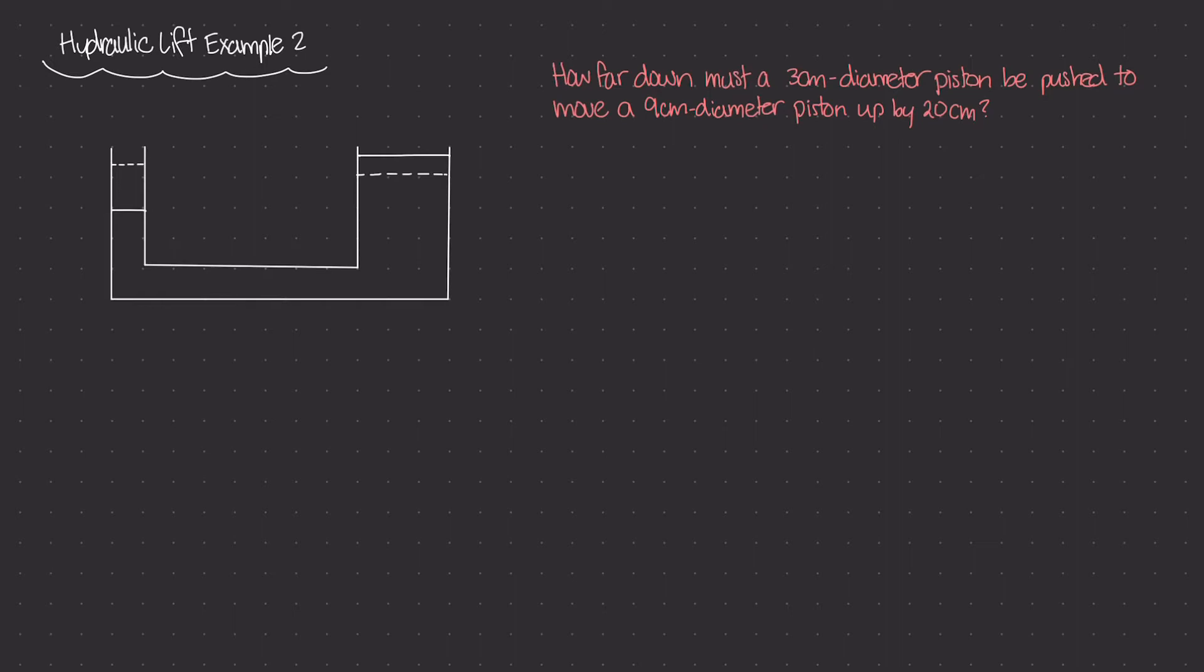In other words, if we push piston one down by a certain amount, then the volume that got displaced, which is this volume right here, is going to equal the volume here on piston two that piston two moved up. So if I were to call this space volume one and this space volume two, I could say that V1 is equal to V2. The two volumes of fluid are exactly the same.